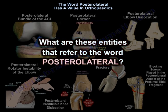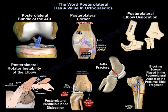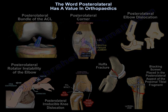What are these entities? There is a posterolateral bundle of the ACL, a posterolateral corner, a posterolateral elbow dislocation, a posterolateral rotatory instability of the elbow, a posterolateral irreducible knee dislocation, a posterolateral fracture of the femoral condyle called a Hoffa fracture, and blocking screws placed in the posterolateral aspect of the proximal tibial fragment.